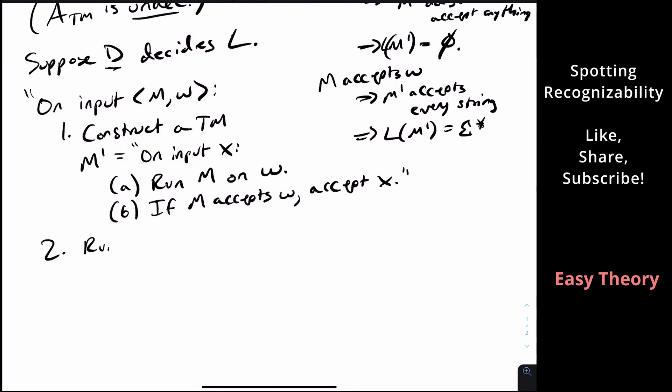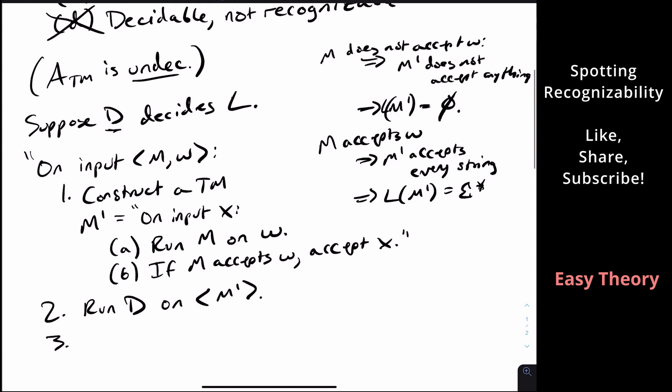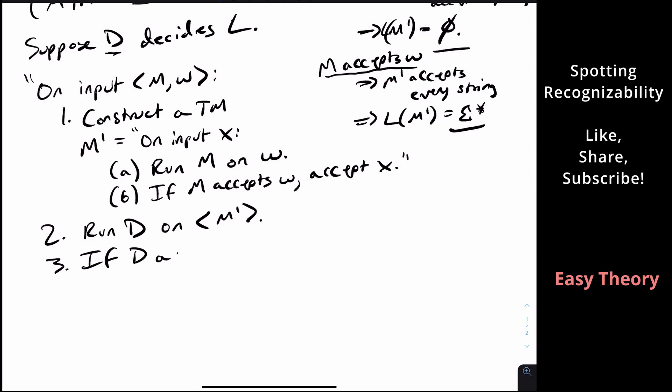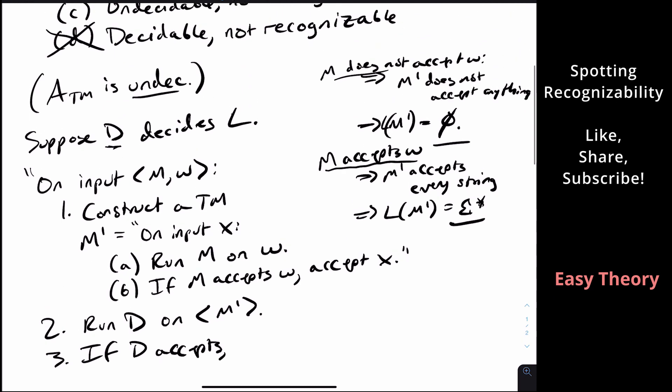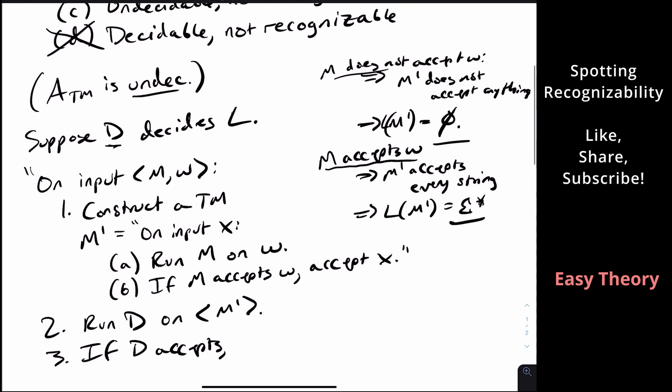So if we've run that supposed decider D on M prime, well, it is either going to say it accepts some string of length 2020 or not. But the only two cases that are possible are sigma star and empty set, which are corresponding with M accepting W. So if D accepts, then that means that M prime does accept some string of length 2020, which means in our case, it is equal to sigma star.